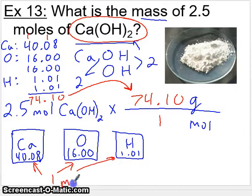Anytime you're pulling these numbers from the periodic table, these numbers will always refer to 1 mole of the compound. So all that's left to do is multiply 2.5 by 74.10. And we will call it a day.